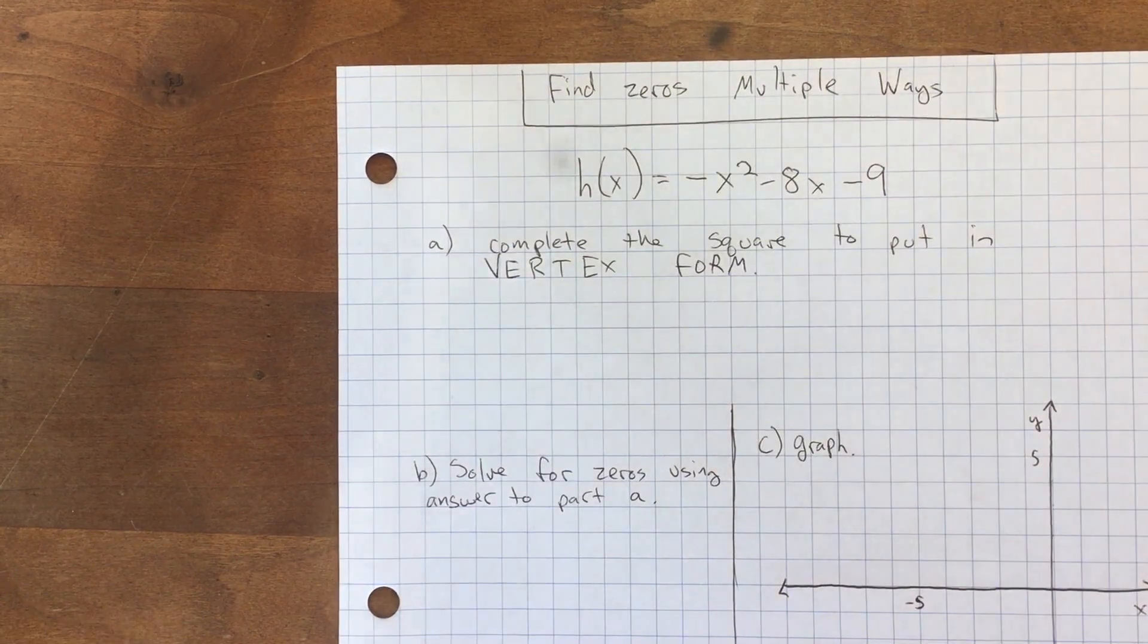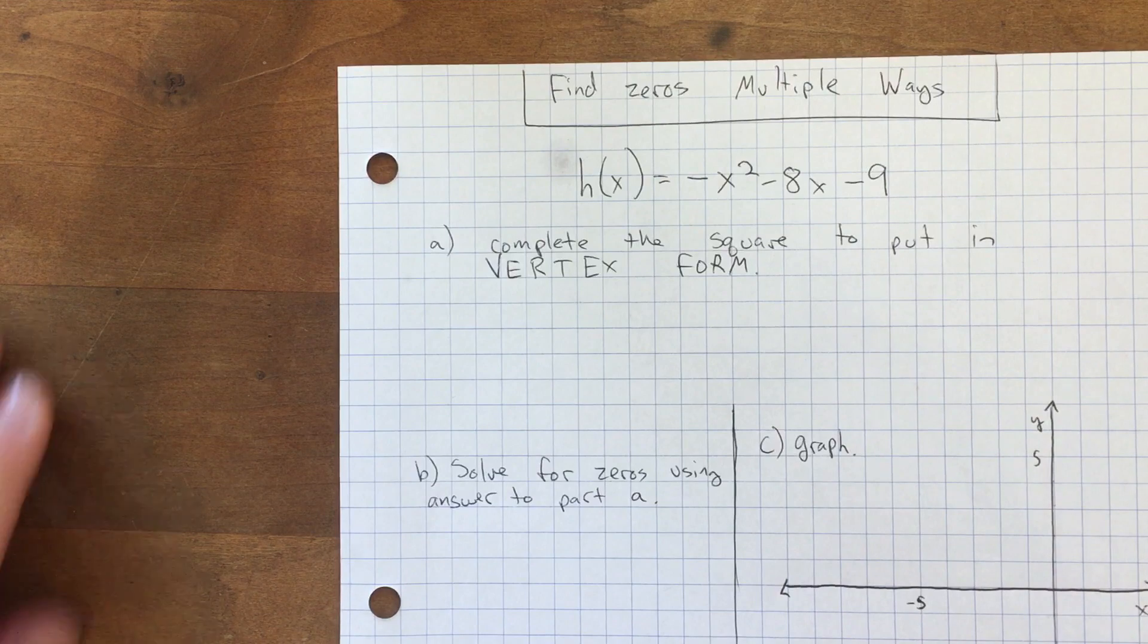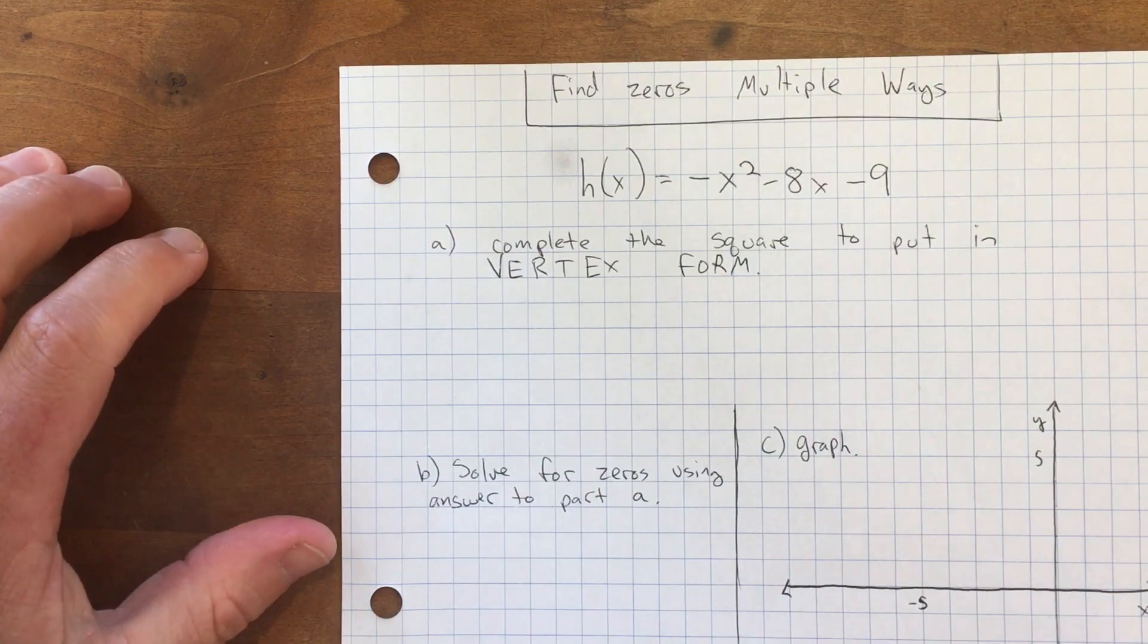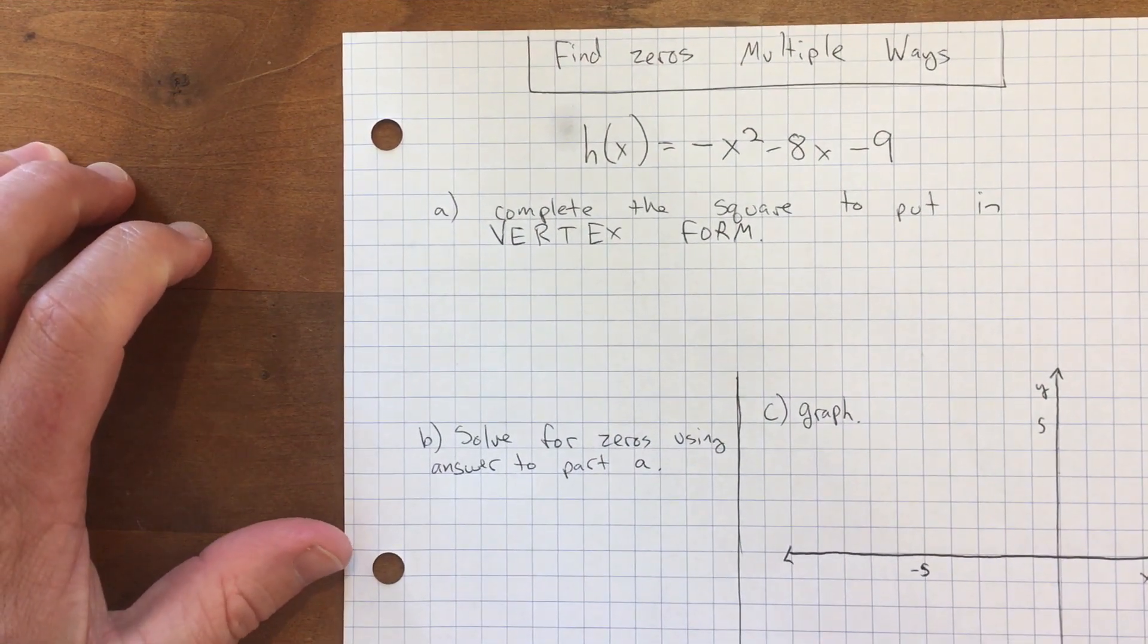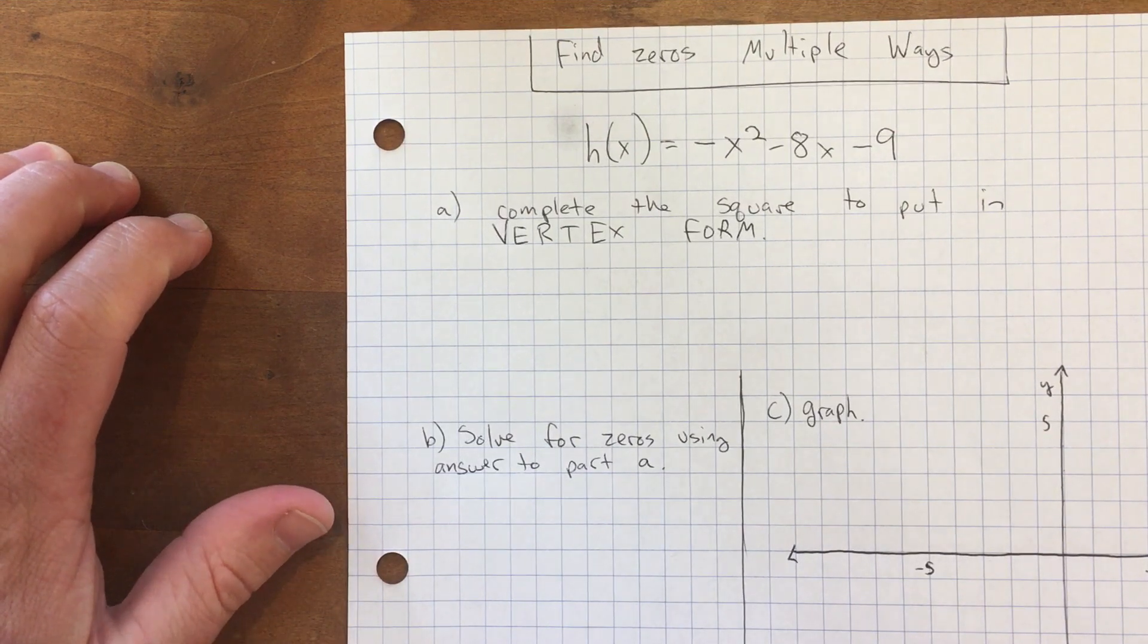Now that we know a little bit about the quadratic formula, I want to review the various ways we can find zeros, including the quadratic formula.